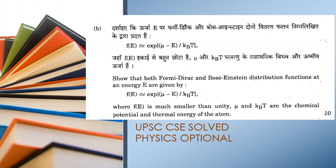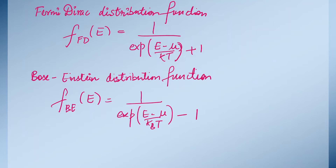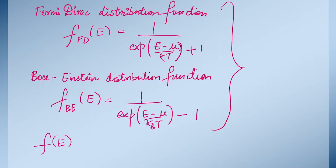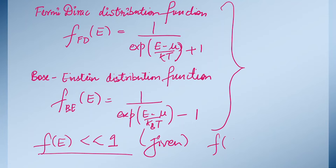We know the general expression for the distribution functions for Fermi-Dirac and Bose-Einstein. We just have to write down these distribution functions. The Fermi-Dirac distribution function and the Bose-Einstein — these are the two distribution functions we should know before moving on. In this question, we are given that f(E) is very much less than unity. We have to use this condition to prove that both distribution functions converge to exponential of (mu minus E) divided by k_b T.